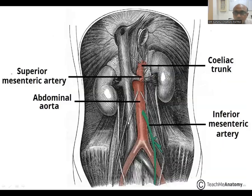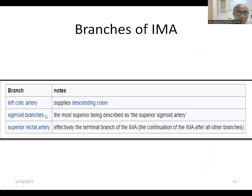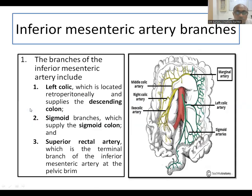You can see this is the aorta. The inferior mesenteric artery arises from the aorta and divides into the left colic artery, sigmoid branches, and the superior rectal artery. So this inferior mesenteric artery divides into the left colic artery, and then further bifurcates into the sigmoid arteries and the superior rectal artery. Identifying these vascular structures is very important to define the mesorectum.